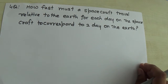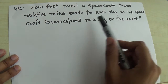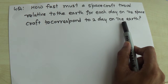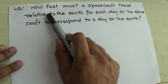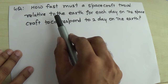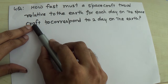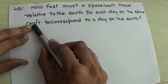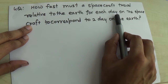This problem is related to the question: how fast must a spacecraft travel relative to Earth for each day on the spacecraft to correspond to two days on Earth? The spacecraft is a moving frame, and the time on the moving frame is denoted by T-naught, so one day will be T-naught.